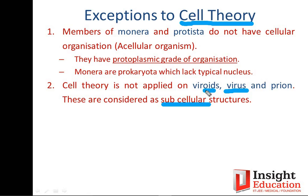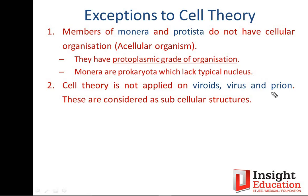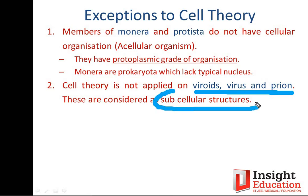Viroids are structures similar to viruses — not exactly a virus, but similar. There are also mysterious molecules called prions — proteins that can produce infection. They are still only proteins or peptides, yet they are able to produce infection in humans. These three structures — viruses, viroids, and prions — are not considered cells; they are subcellular structures and are exceptions to cell theory.